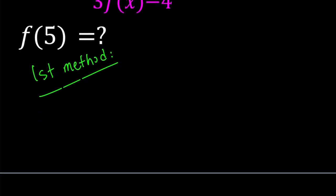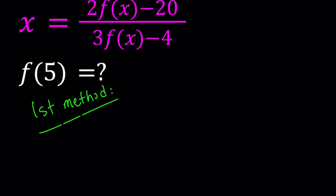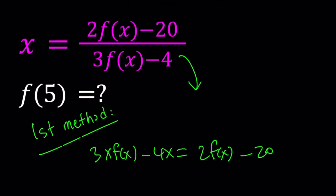For my first method, I'm going to use cross multiplication. Let's go ahead and do that. Multiply x by 3f of x: 3x f of x minus 4x equals 2 times f of x minus 20. That comes from the original equation, right?